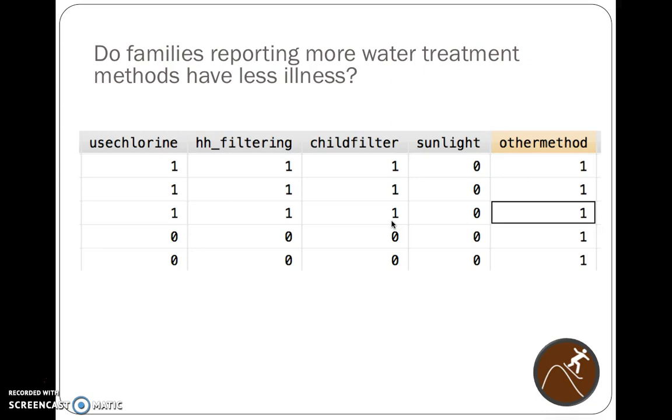So we might be interested in comparing from our Kenya study whether or not families who do more water treatment at home have less illness. We had about 400 people who didn't have access to publicly treated water. So they may use chlorine, they may filter the water, they may use sunlight, they may use another method, particularly boiling was a commonly cited method in that study.